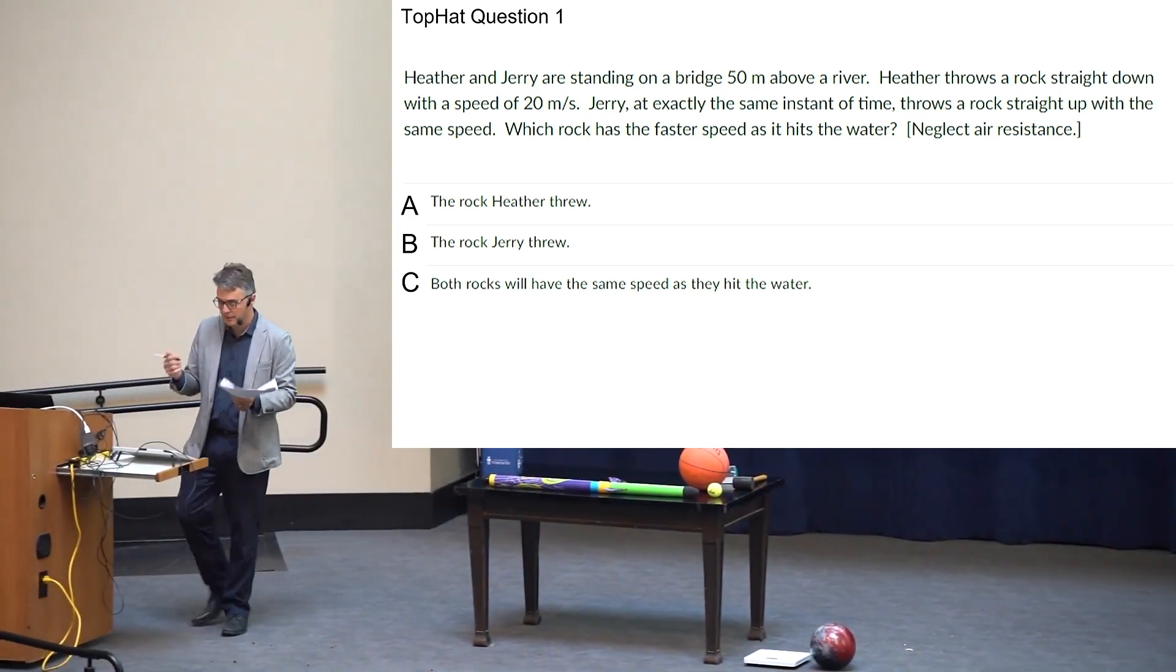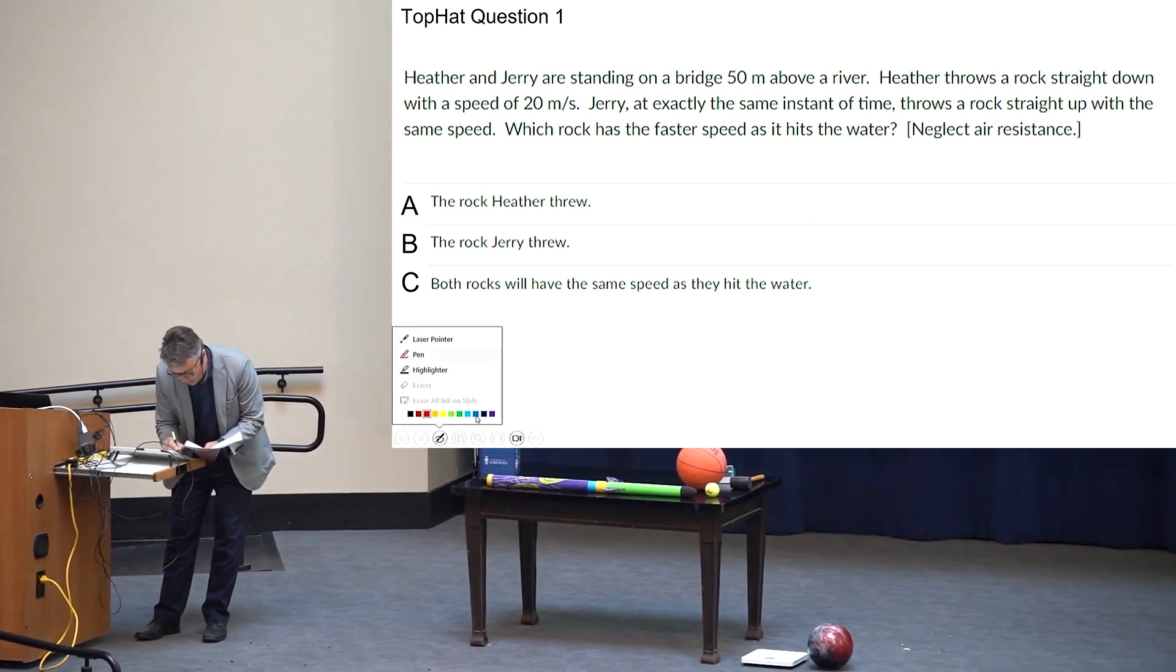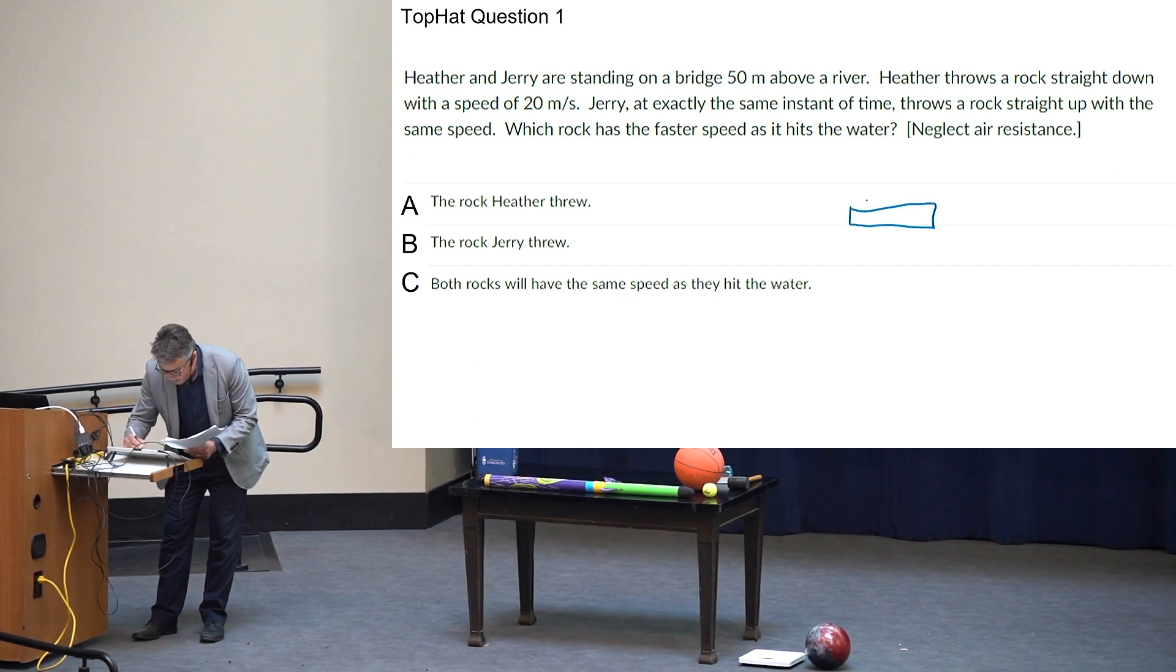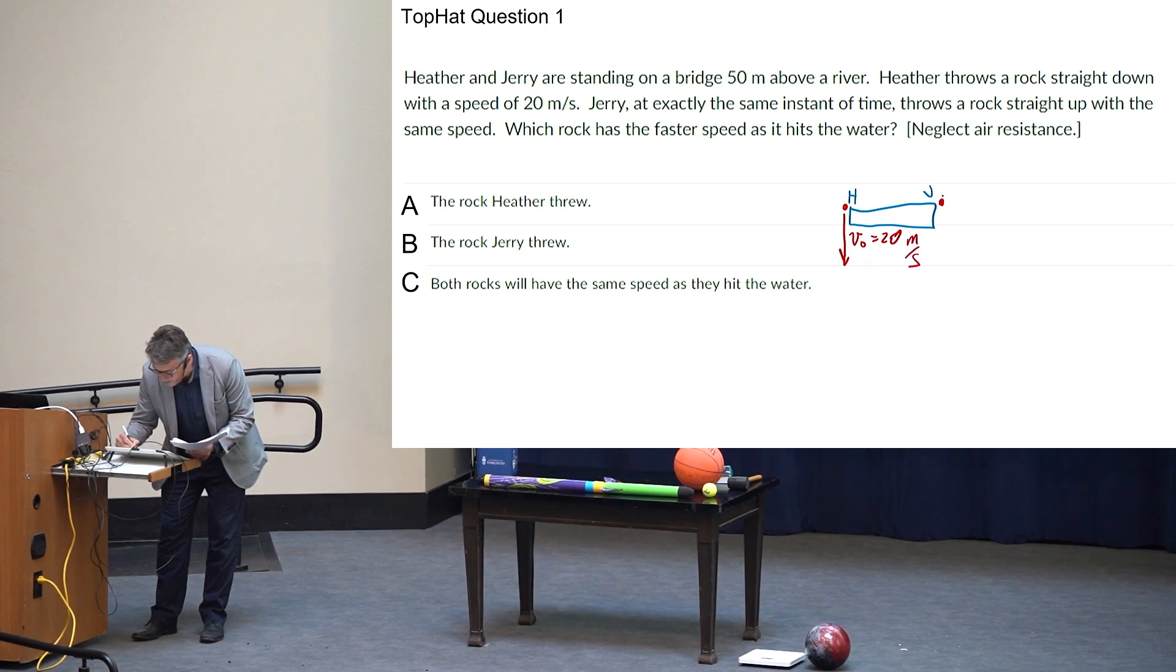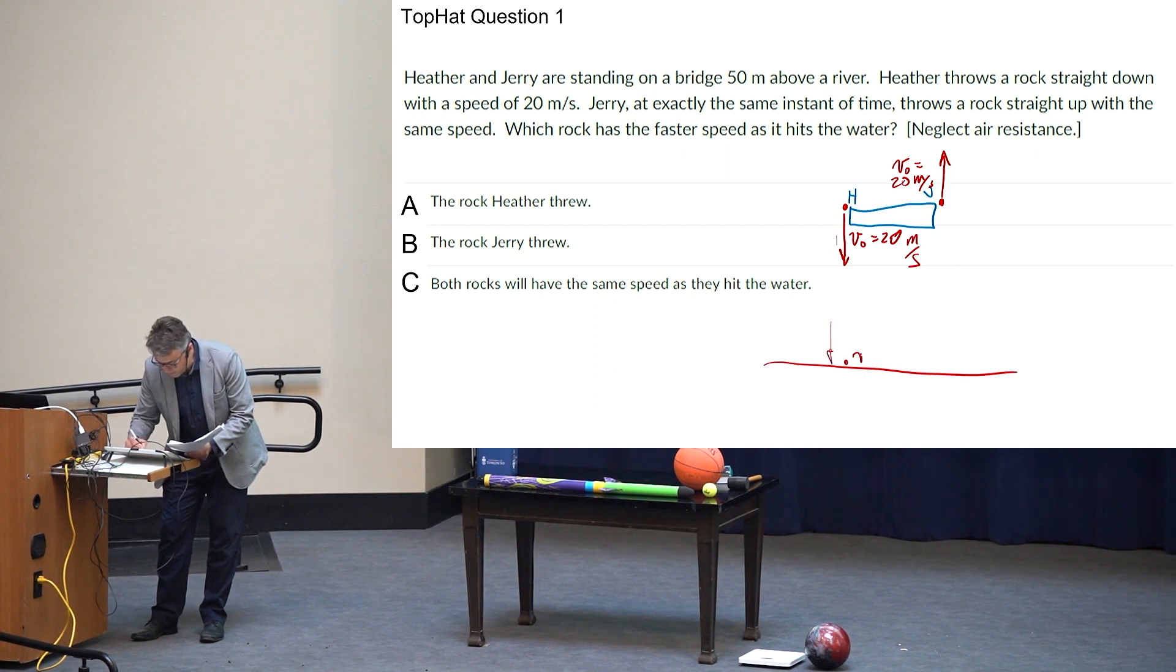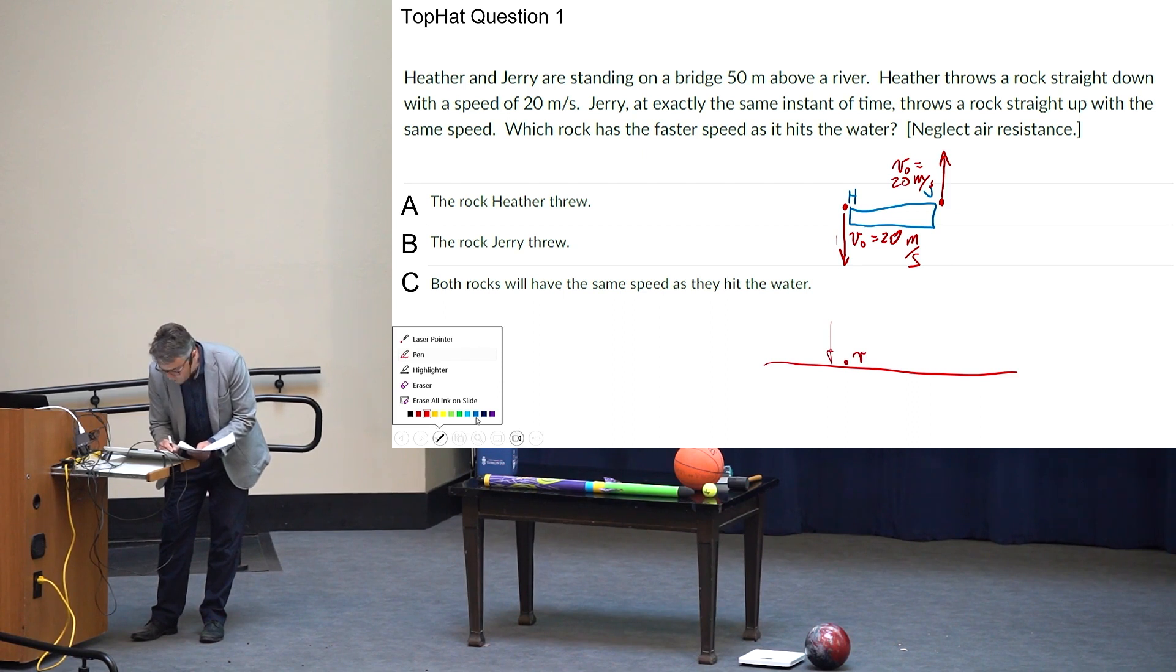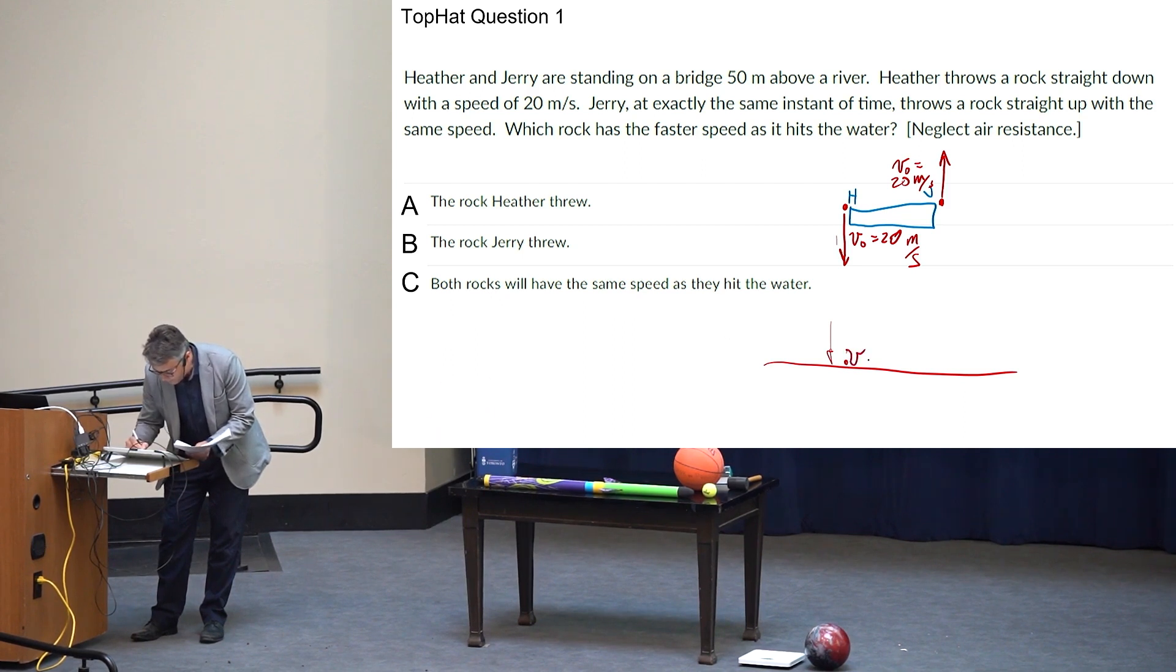So, survey says, let's take a look here. It's very mixed. It's not quite third, third, third. Maybe 20% are voting for Heather, 30% voting for Jerry, and 50% voting for both have the same speed. Harlow thinks that it's C. That's the one I like, and I'll tell you why.